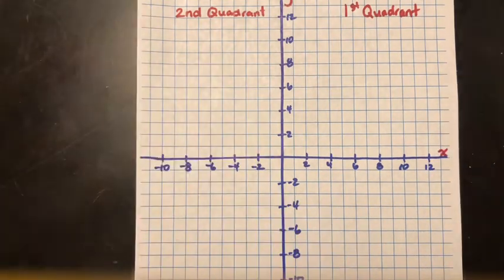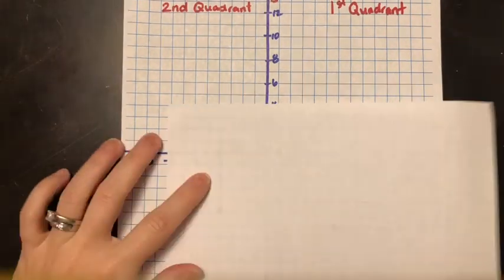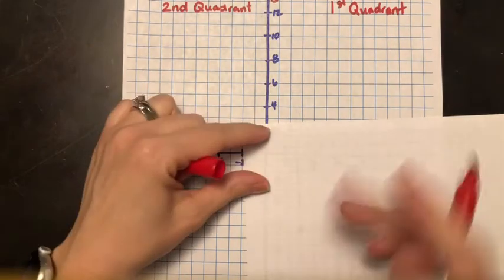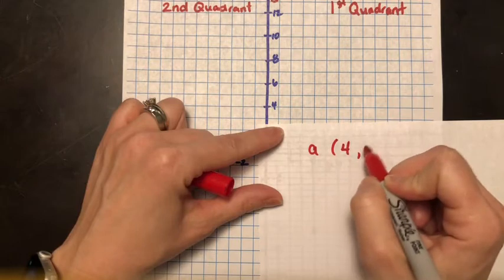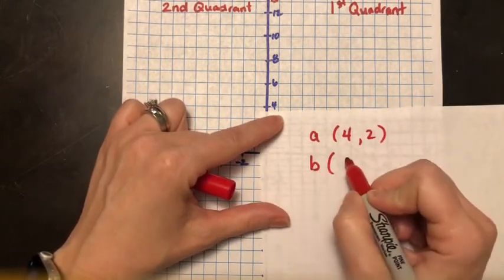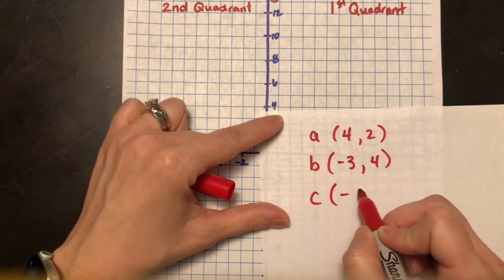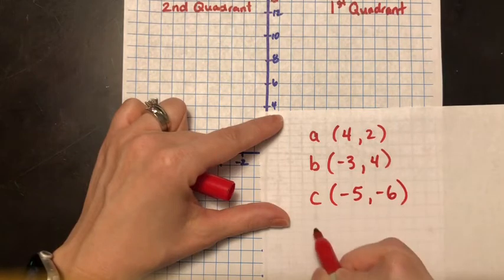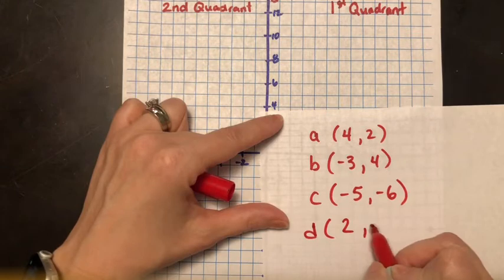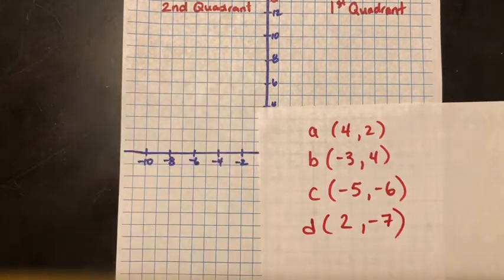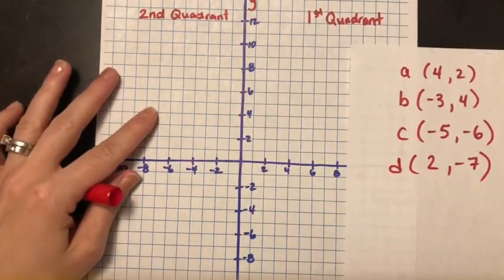So today's work, you might be given, let me just take this paper here, you might be given some coordinates and you need to plot them. So you might be given, say, a is going to be at 4 comma 2. We'll go b, we'll say negative 3 comma 4. c, we'll say negative 5 comma negative 6. d is going to be at 2 comma negative 7.